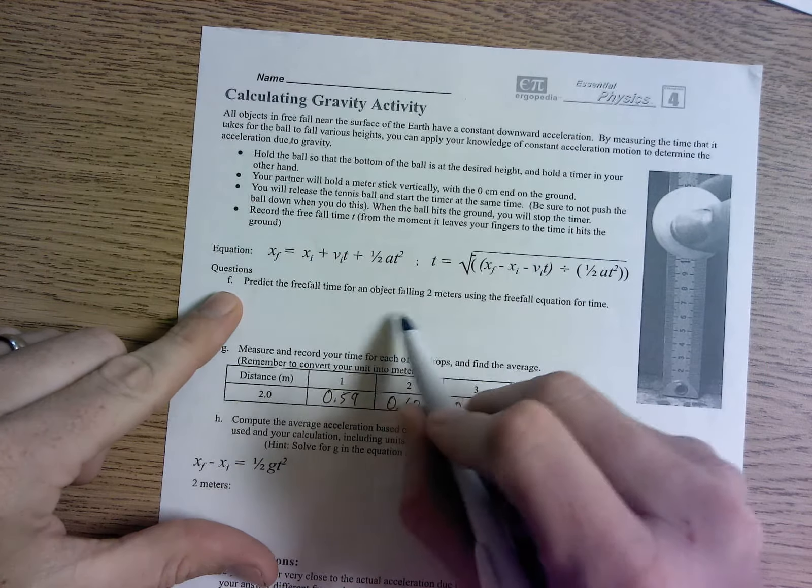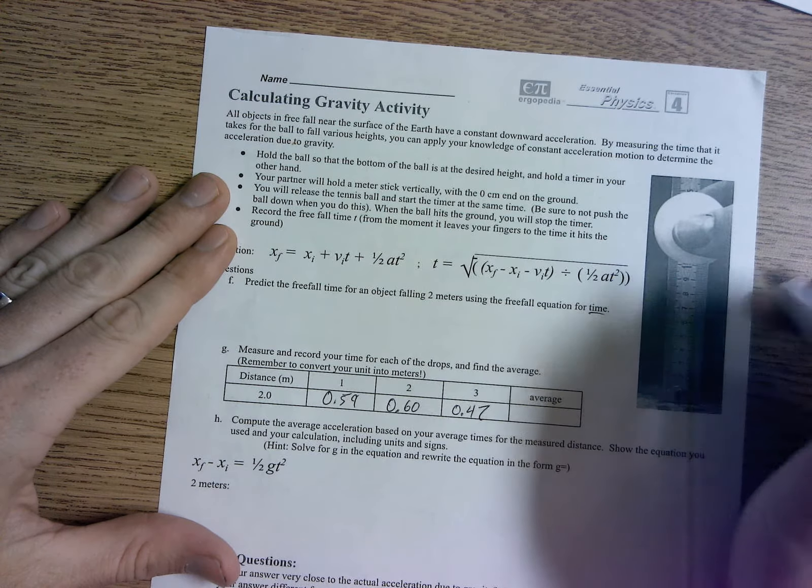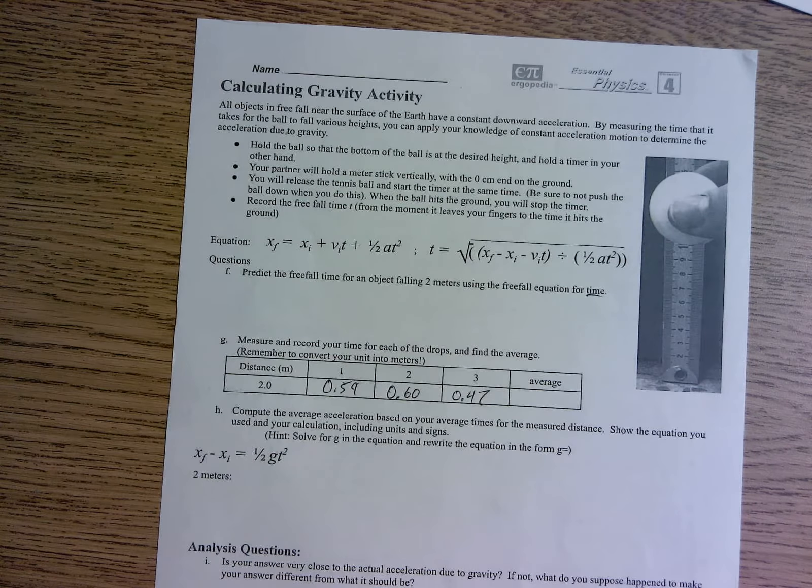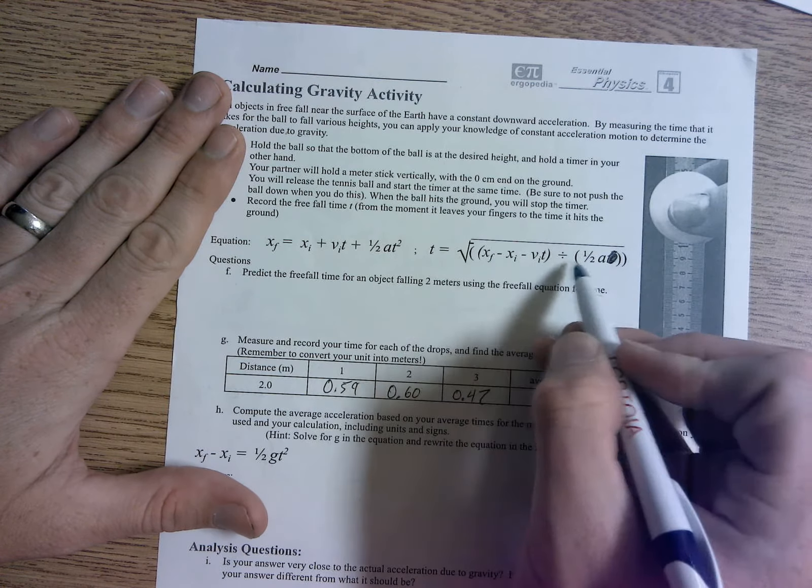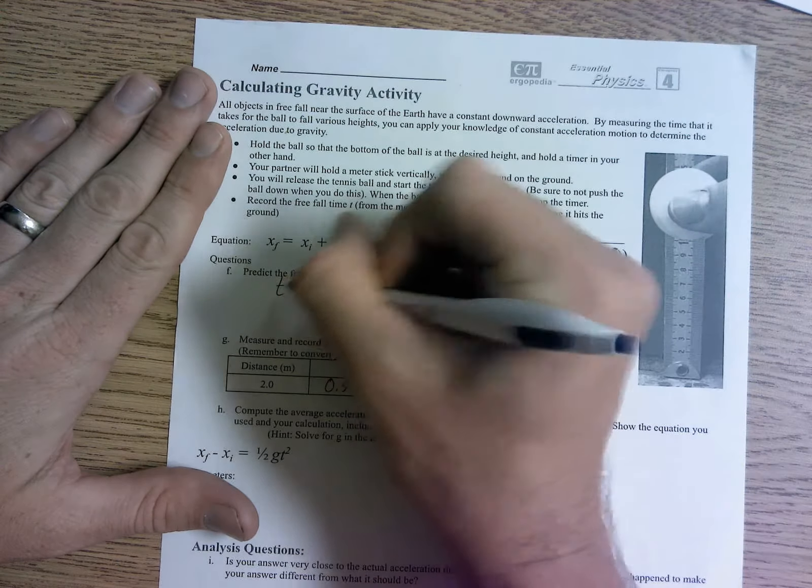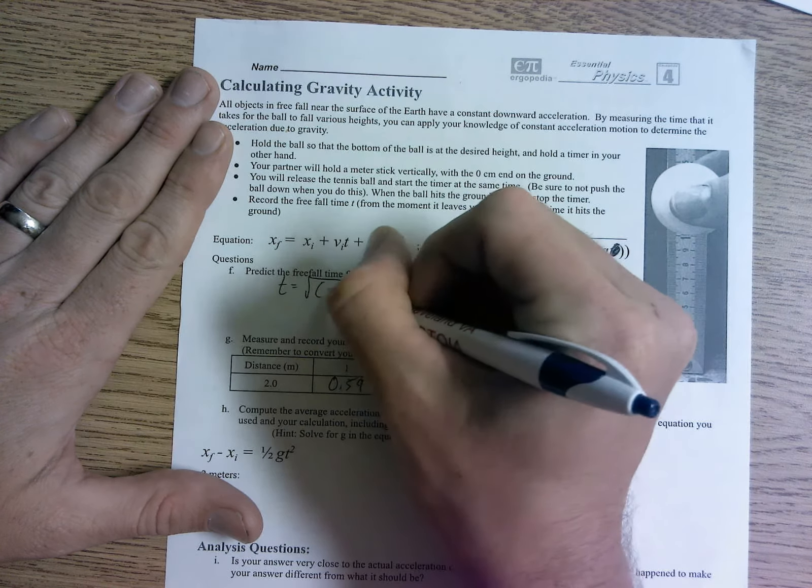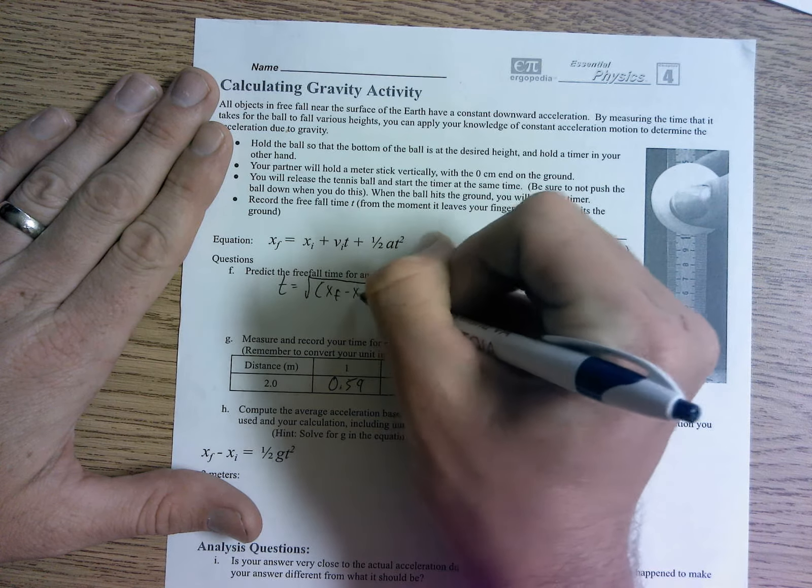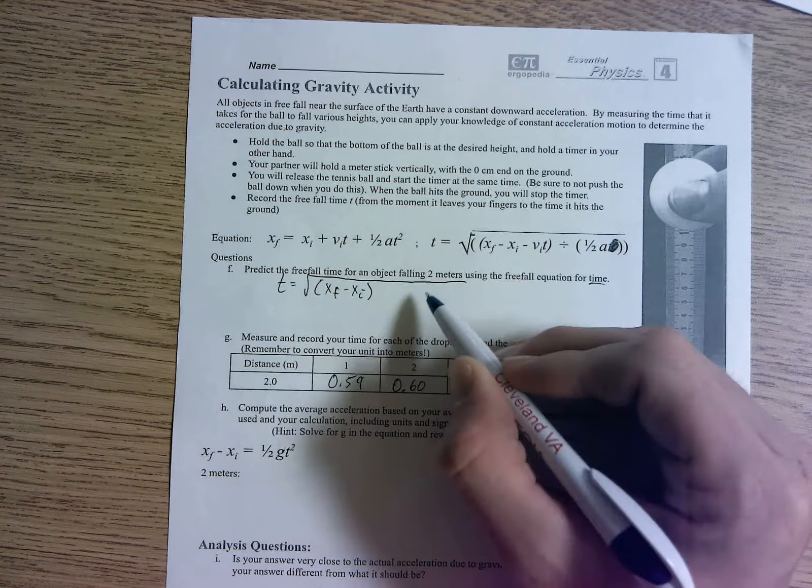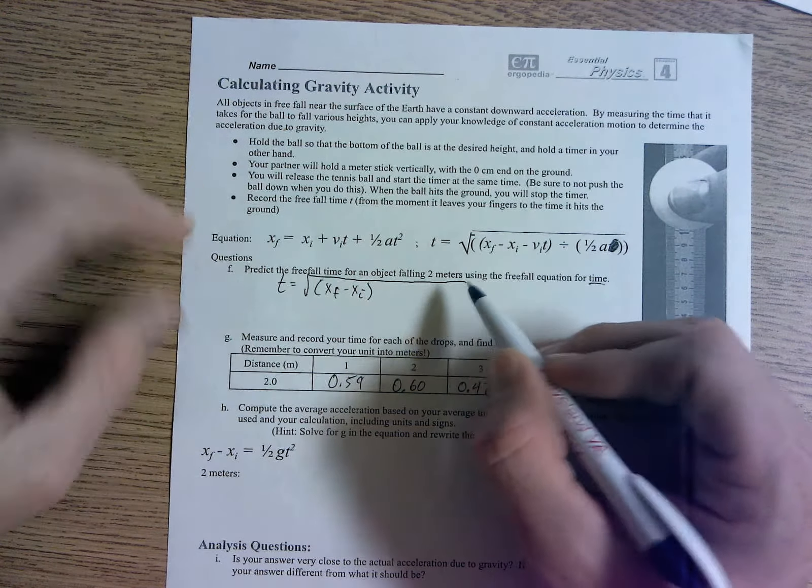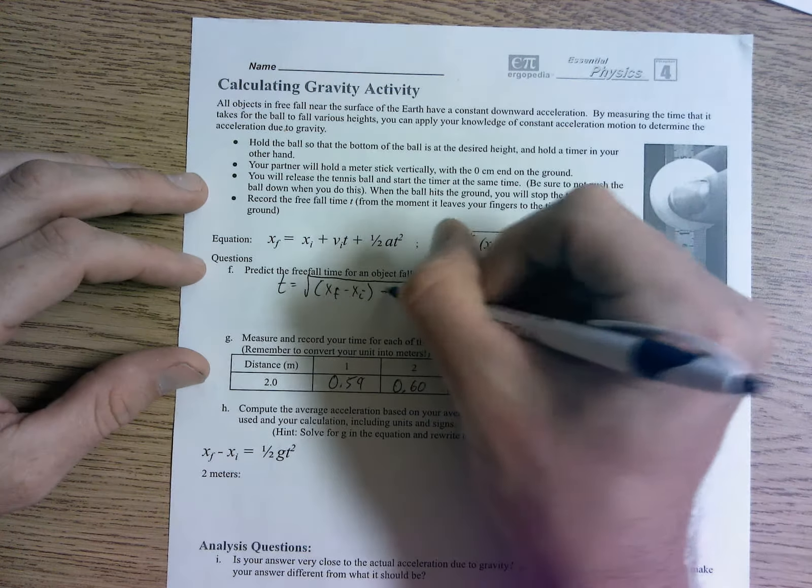Predict the free fall time for an object falling two meters using the free fall equation for time. So predict the free fall time, once more we're solving for time. Here's your equation over here, I already put it for you if you wanted to just use these values. T is equal to the square root of all that stuff. That's xf minus xi minus vit. Well, velocity initial, if it's an object that's falling once again just like the ruler, that vit is going to be zero, so I'm just going to choose to not write that down.